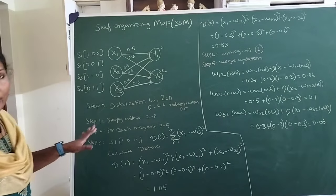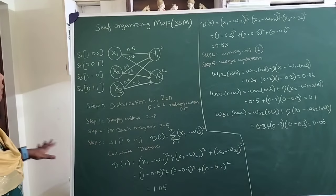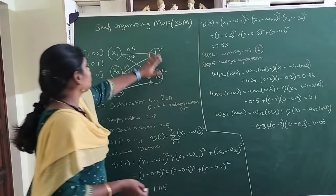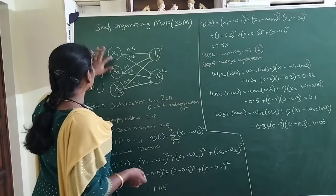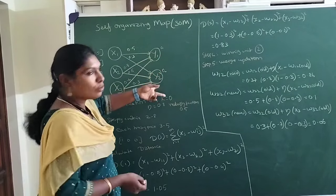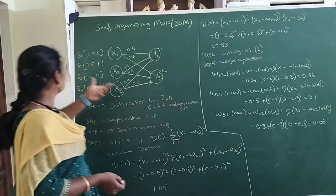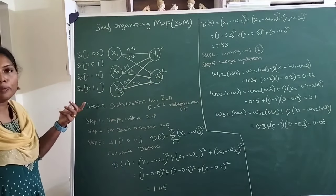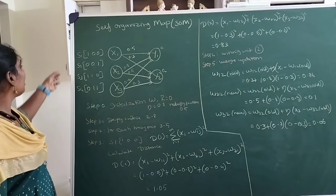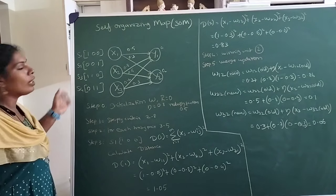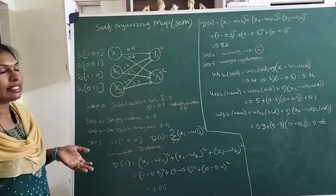Here is a very simple example. This is a network structure where I have 3 input neurons with 2 clusters, and these are all the patterns that I am going to present. I have 4 input patterns.